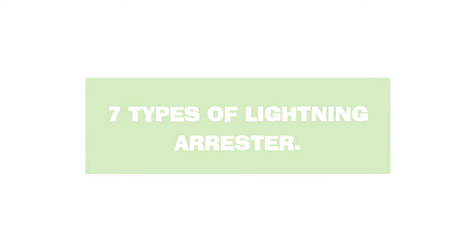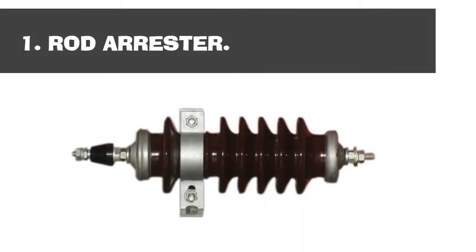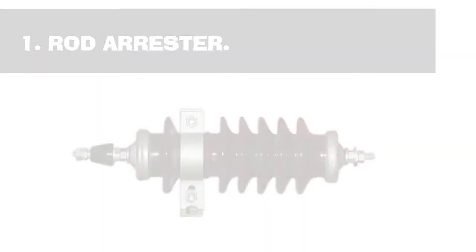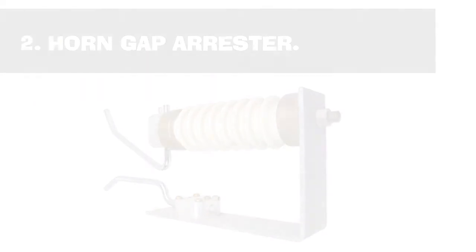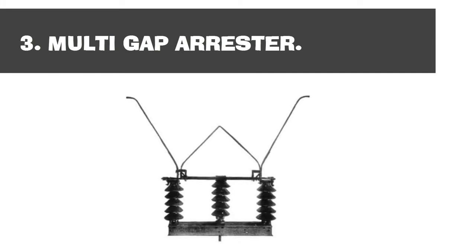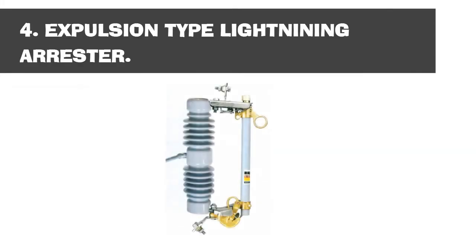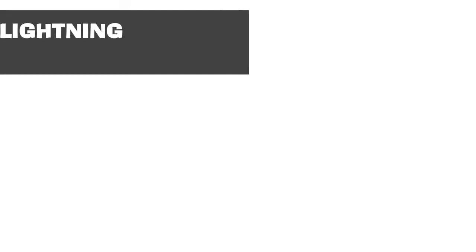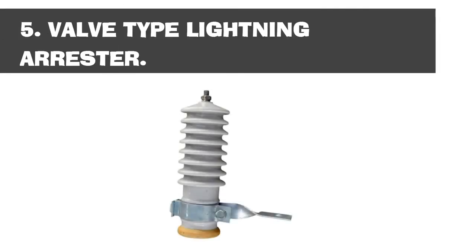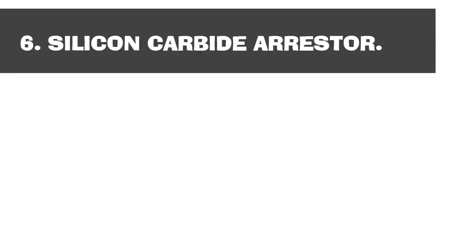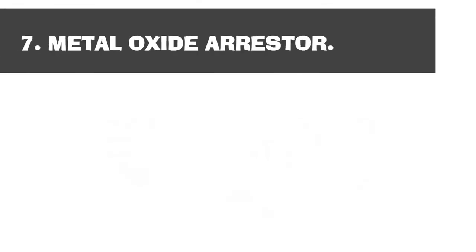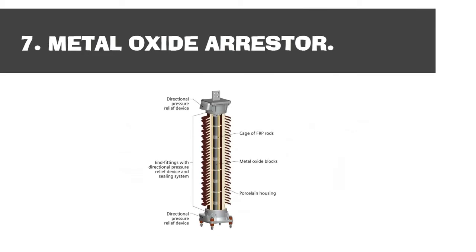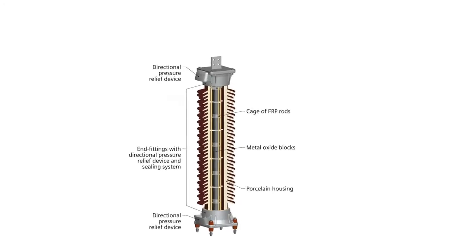7 Types of lightning arrestors: 1. Rod arrestor. 2. Horn gap arrestor. 3. Multi gap arrestor. 4. Expulsion type lightning arrestor. 5. Valve type lightning arrestor. 6. Silicon carbide arrestor. 7. Metal oxide arrestor.